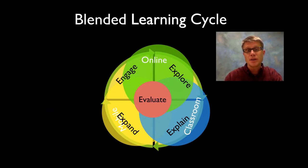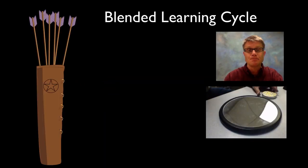And so if we were to put those together we have the blended learning cycle. I always come up with acronyms so I can remember things, and so the acronym I use is QUIVERS, Q-U-I-V-E-R-S. And just like there are six arrows in this quiver, there are six parts to my blended learning cycle.